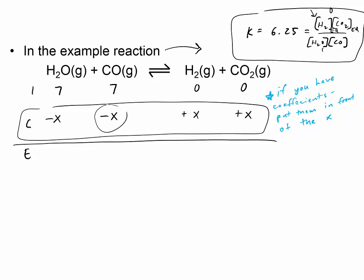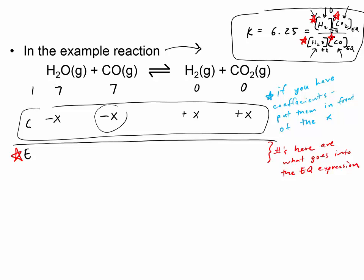Remember that our equilibrium expression only uses the amounts at equilibrium — the E line. When we plug numbers into the expression, they cannot be the initial amounts; plugging in initial amounts calculates Q, which we'll cover later. The numbers that go into the equilibrium expression must come from the E line. The E line is the I line plus the C line.